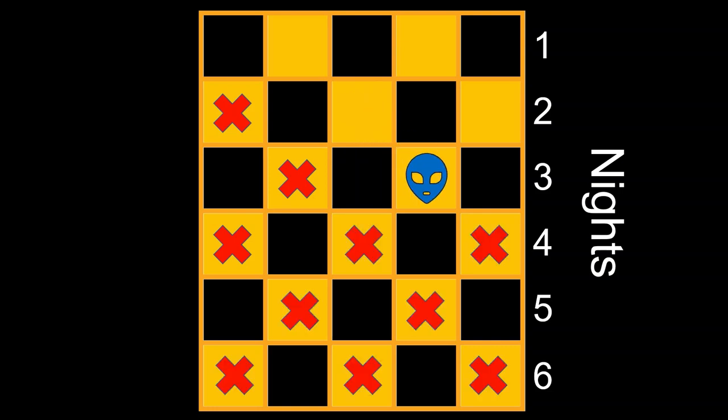This eliminates all squares of the color he started with, which is light squares in this case. So to eliminate the dark squares, he just has to follow the same pattern but has to start on a dark square that is one room away from the side.